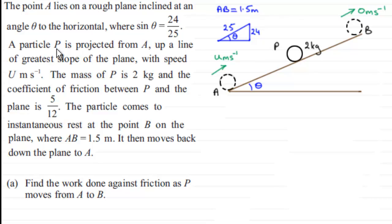And then a particle P is projected from A up the line of greatest slope with a speed of u meters per second. And the mass of P is 2 kilograms, and the coefficient of friction between P and the plane is 5/12ths.